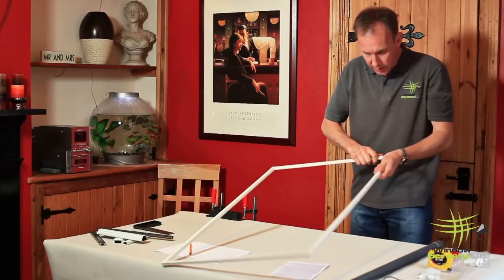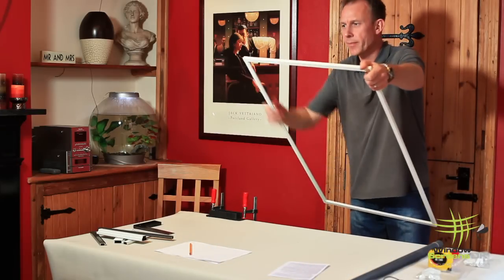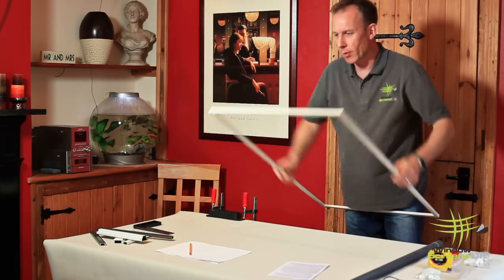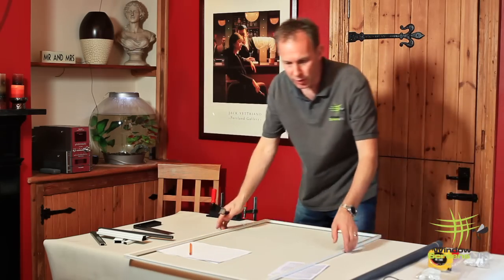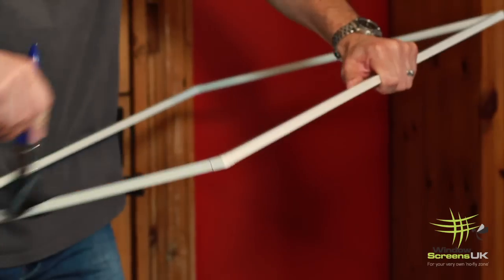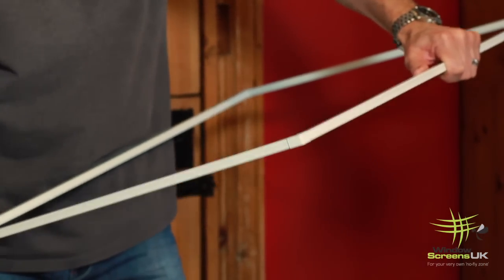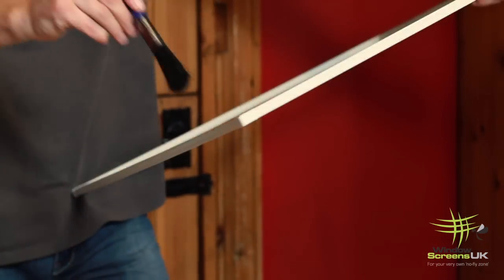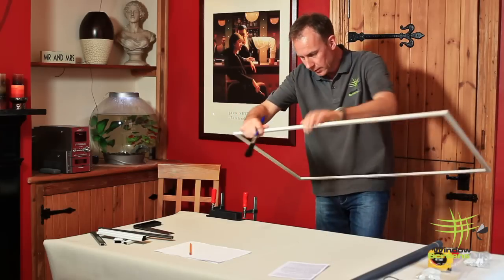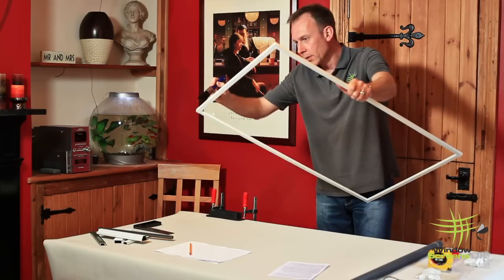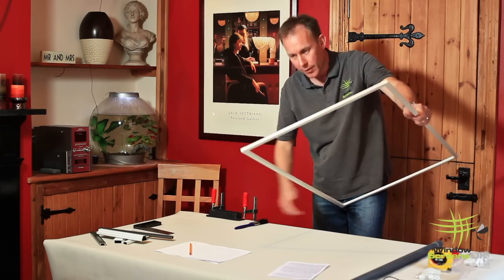And what will happen is when the mesh and the spline is in, that will hold those corners in place. And what we do just before we mesh now is give a bit of a dust down, particularly in the channels, just in case there's anything gathered there from when we've cut. So now the frame's ready for meshing.